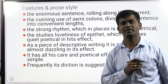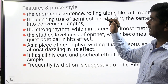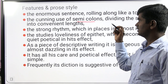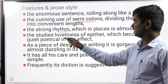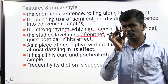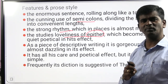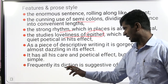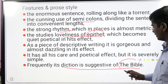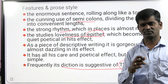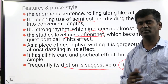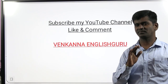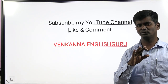Features of Ruskin's writing include: enormous sentences rolling along like a torrent; the cunning use of semicolons; strong rhythm; loveliness of epithet — using one-line proverbs and epithets; descriptive writing with political effect; and his language is suggestive — like the Bible, using words and phrases as if from scripture. That is it with regard to John Ruskin. Subscribe to our YouTube channel Venkarna English Guru.